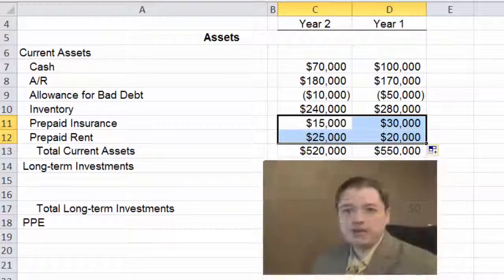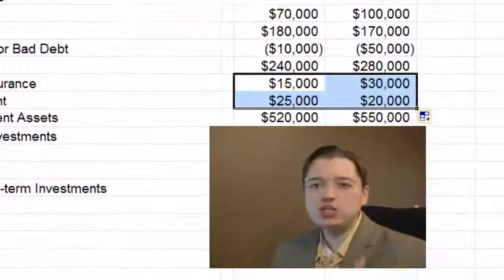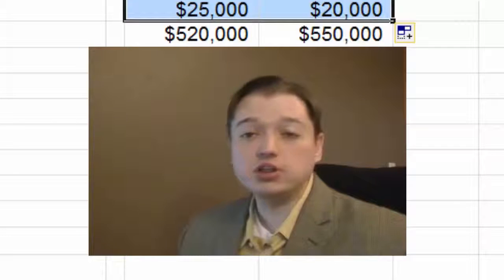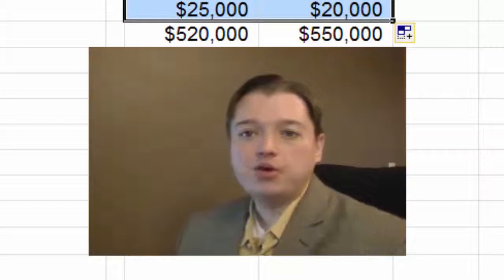That's our current assets section. Again, these are all the assets that we intend to use up in one year or operating cycle, whichever is longer. And we put them in order of liquidity.